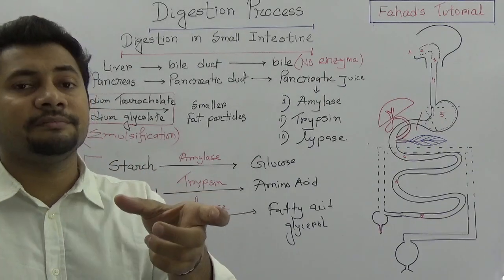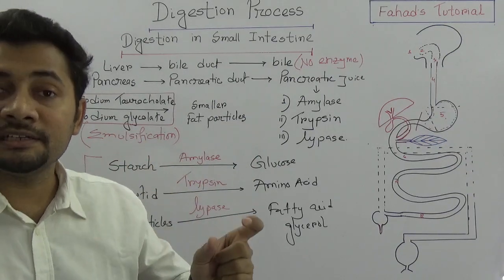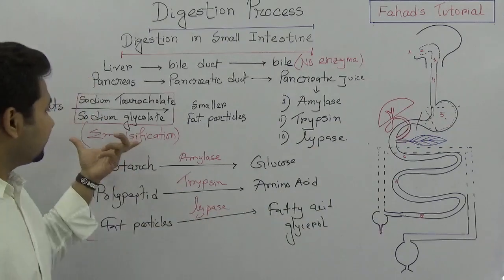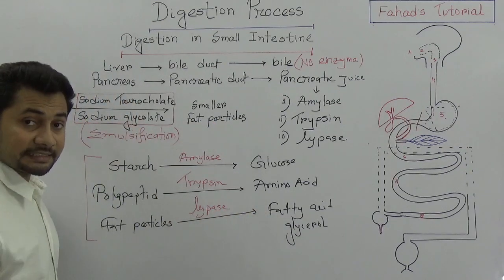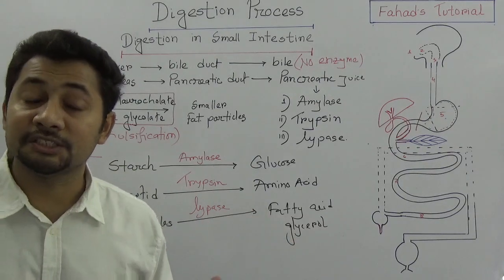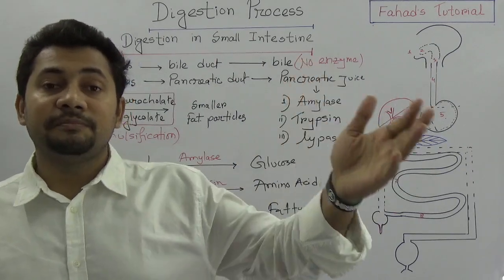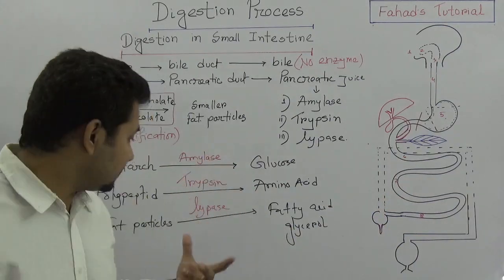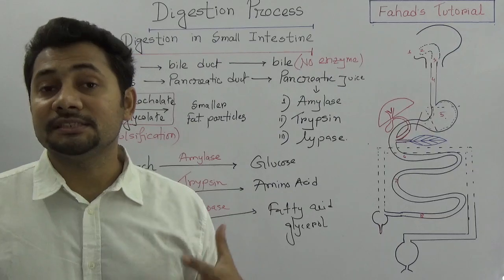This is very important and may come in your exam. Emulsification is the breaking down of fat particles with the help of bile salts — sodium taurocholate and sodium glycocholate. After this, the fat particles are turned into fatty acids and glycerol, which are the absorbable portions for our body.